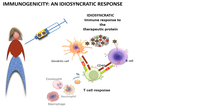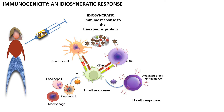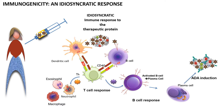This T-cell response will produce certain cytokines that can activate eosinophils, neutrophils, or macrophages. These cells deal with eliminating that danger signal, which is the whole point of the immune response. On the other hand, the T-cell response can trigger a further B-cell response with the appropriate cytokine stimulation. It activates B-cells and makes them mature into plasma cells. It is the plasma cell that is responsible for anti-drug antibody induction.